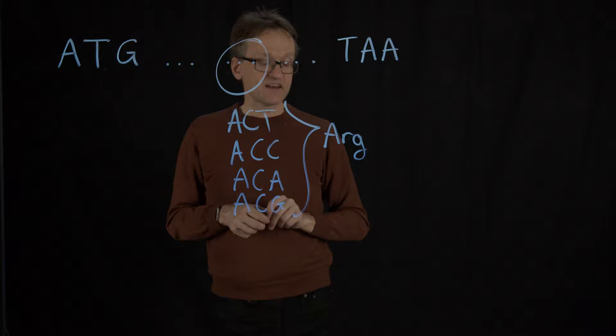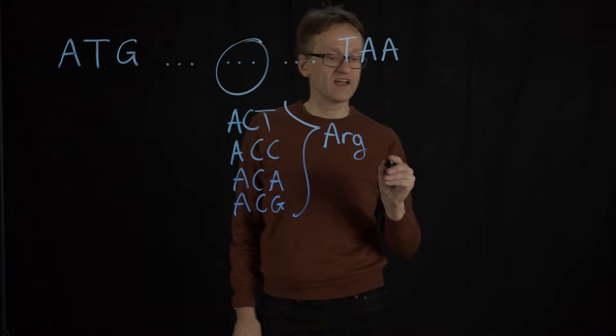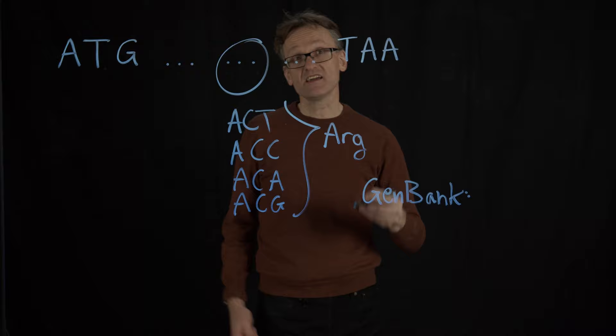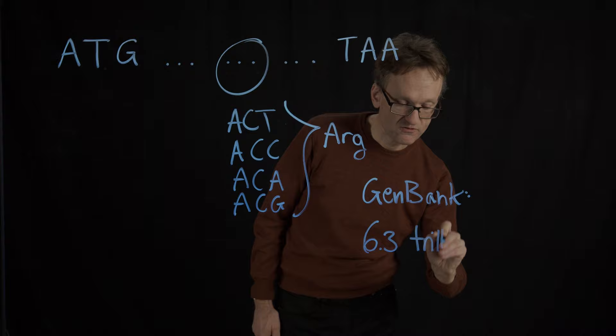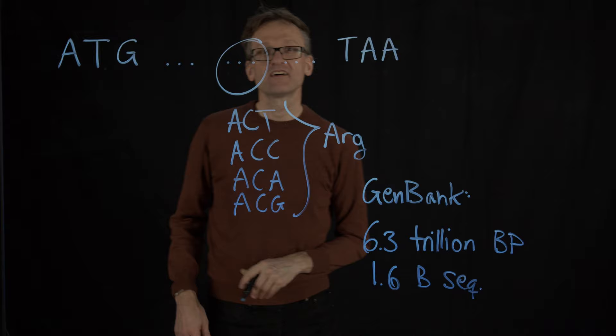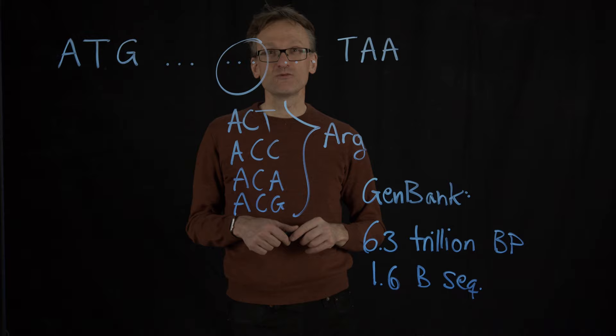We have collected an insane number of sequences like this. The place in the world where everybody in science deposits these is called GenBank. GenBank is actually a collaboration — there are similar efforts in Europe and Asia. It contains roughly 6.3 trillion base pairs and 1.7 billion sequences, covering roughly half a million different species. That's an insane amount of information. Compared to the human genome, which has 3 billion base pairs in total, you start to appreciate just how much data this represents.